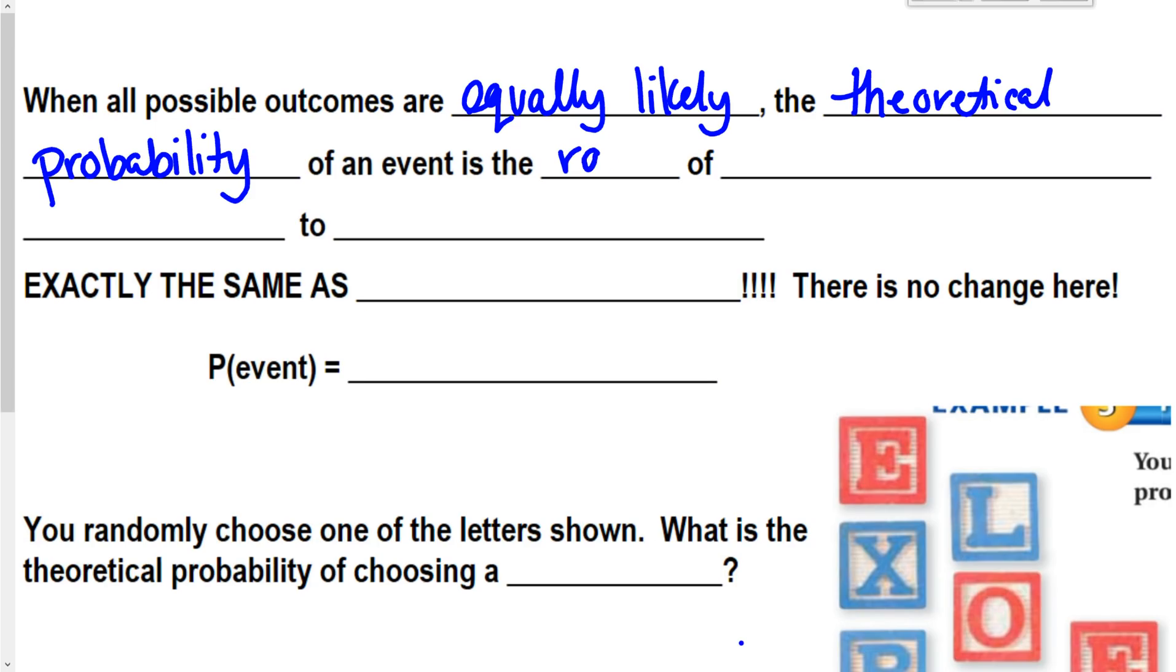...is the number of favorable outcomes to the number of possible outcomes. This is just not working out well. So, let me go slower, and hopefully my pen will work a little bit better.